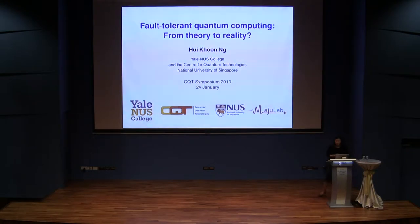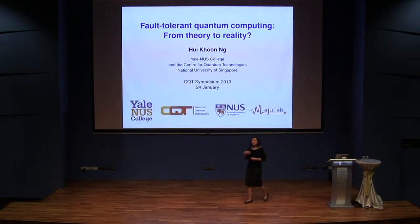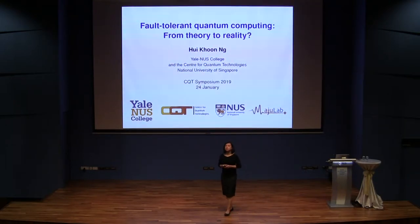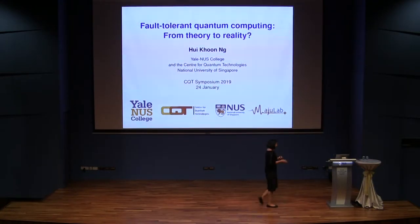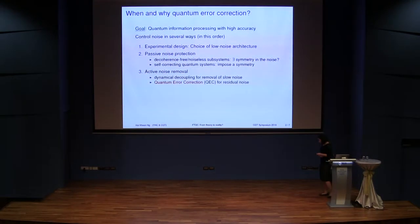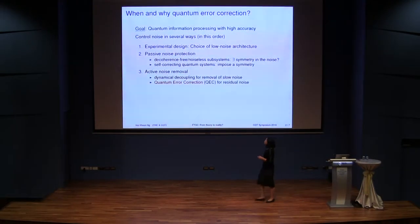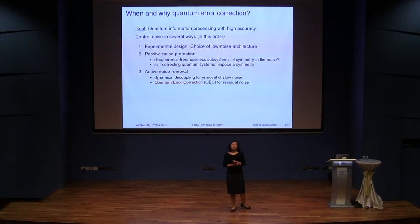Let me start by setting the stage. I'll have a slide on what is quantum error correction, then a slide on what is fault-tolerant quantum computing, and then I will get to all the things that I want to complain about. The first thing I start with is: when do you use quantum error correction and why do you think you might want to do that?